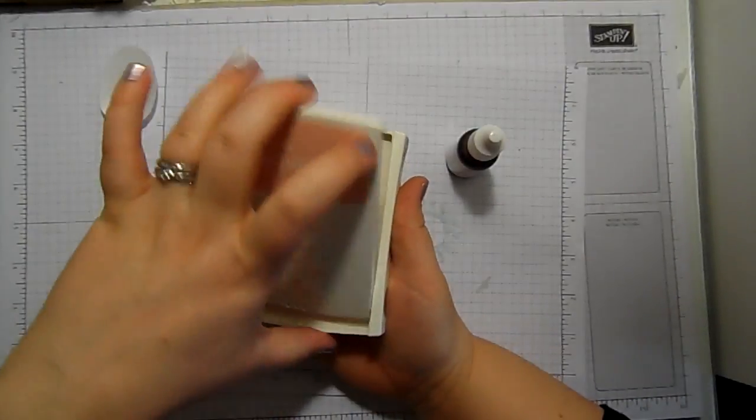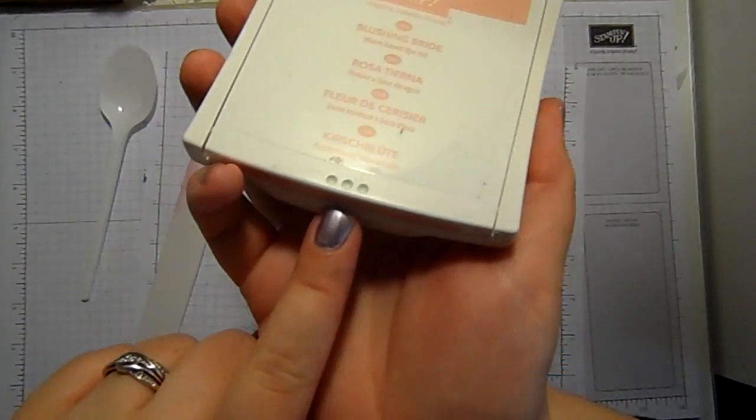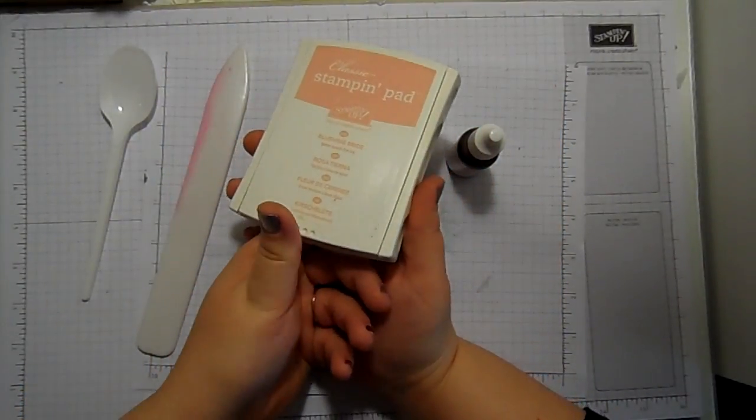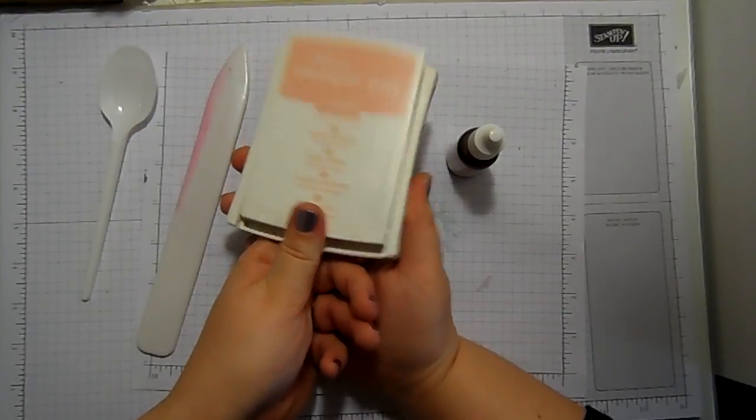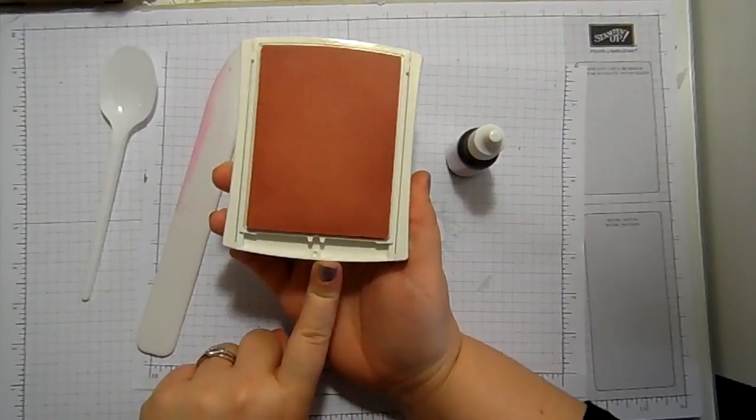So we're going to open our ink pad. If you're struggling with opening your ink pads, you'll see there's three dots on the front. If you put the knuckle of your thumb there and push, it will pop the ink pad up and you can flip it straight over.